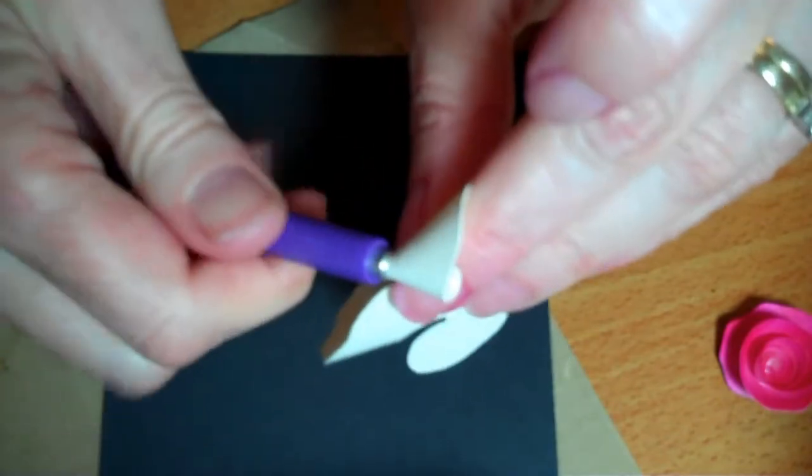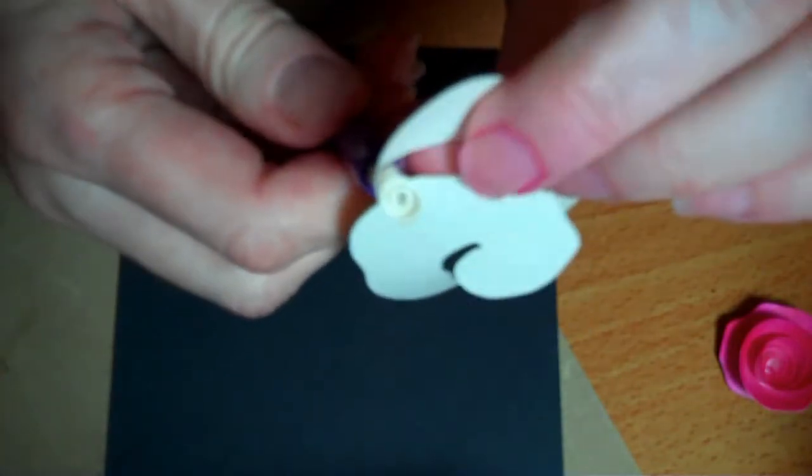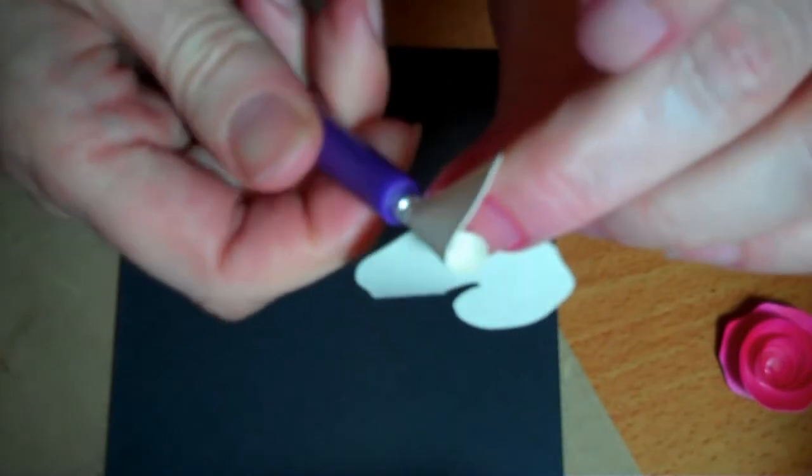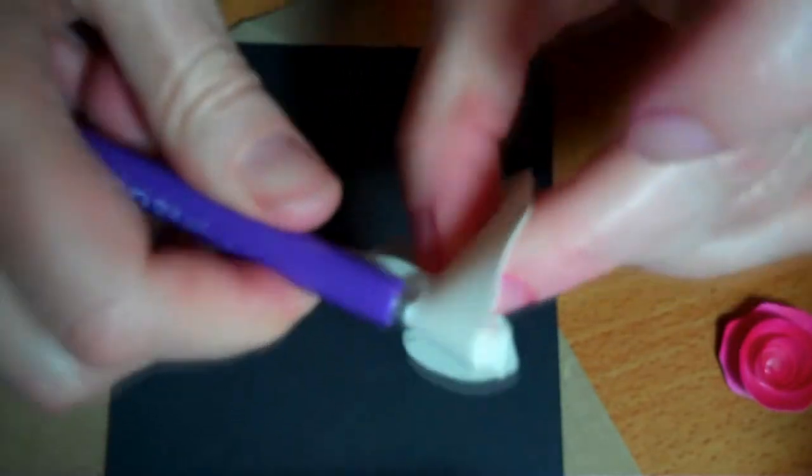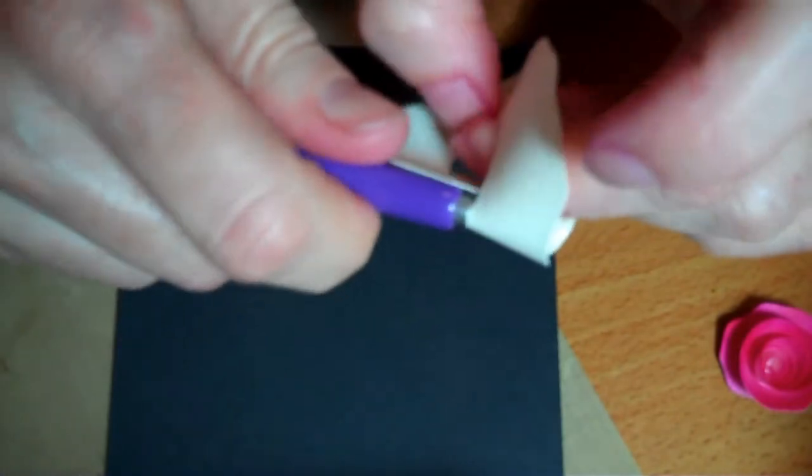All you do is insert a tool. This is a quilling tool. It just inserts into the end, and then you just very carefully roll it up.